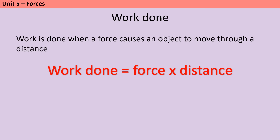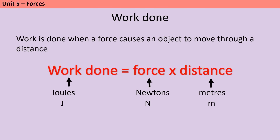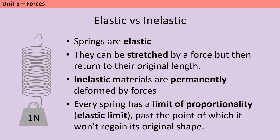When a force causes an object to move through a distance, work is done on the object. When more than one force acts on an object, deformation can happen — changing the shape of an object. Deformed objects can be separated into those that are elastic and inelastic. Springs are elastic — when they're stretched by a force and then the force is removed, they return to their original length and size. Inelastic objects can be permanently deformed so they don't return to their original size when the force is removed.